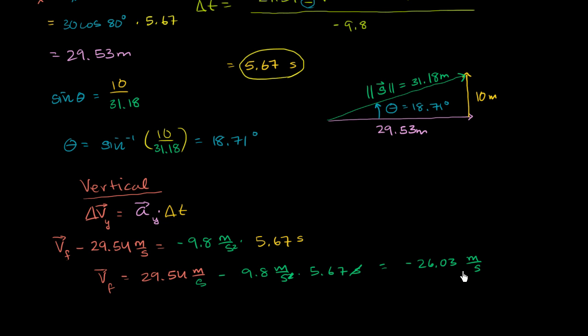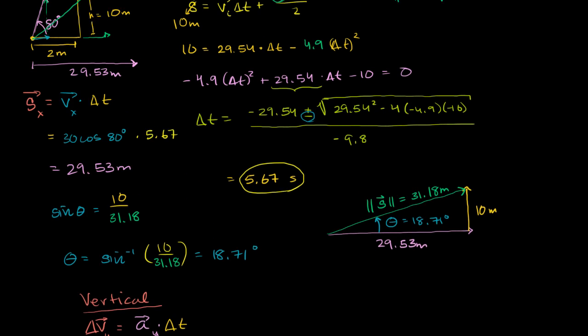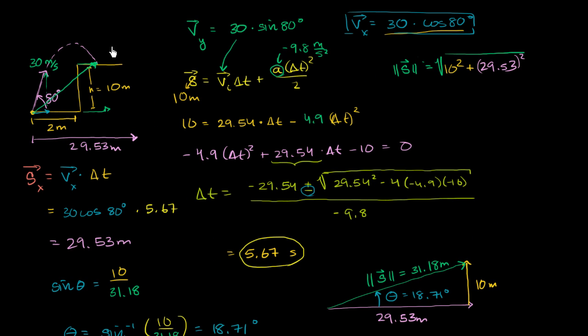You might ask: what does this negative 26.03 meters per second mean? Remember, when we're dealing in the vertical dimension, positive means up and negative means down. So it means that we're going 26.03 meters per second downwards right when we land.